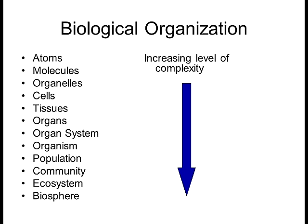Community looks at the interaction between all species in an area. It doesn't just look at one type of organism; it looks at all the interactions between all organisms in that area. That's what we call a community — a very complex level of science that scientists study.